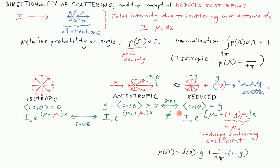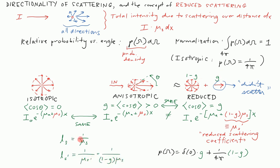This leads to the concept of a reduced scattering step size. Instead of the mean-free path between scattering events being 1 over mu_s, the reduced scattering length ls-prime is longer — because only (1 minus g) of the scattering is contributing, the effective scattering likelihood is lower. So ls-prime equals 1 over mu_s-prime, which is 1 over (1 minus g) times mu_s. Compared to 1 over mu_s, the denominator is smaller, making ls-prime larger than ls — a larger step size reflecting the lower effective scattering likelihood.